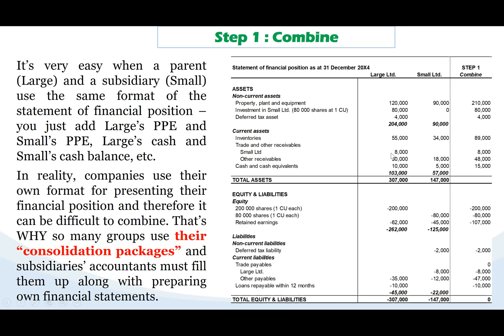Smaller is $8,000. So trade and other receivables — Small's balance with Large — is $8,000. The inter-company, inter-group elimination of other receivables is $3,000.